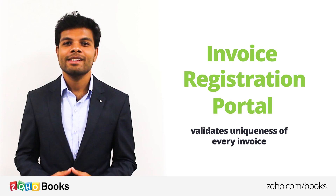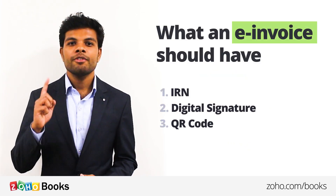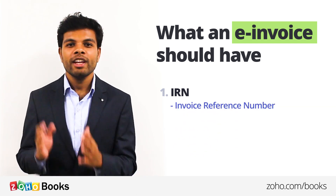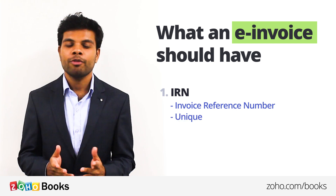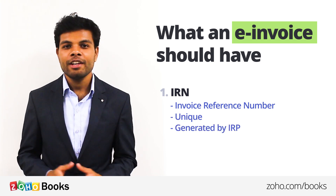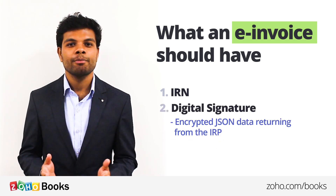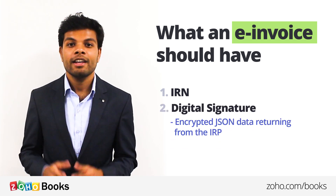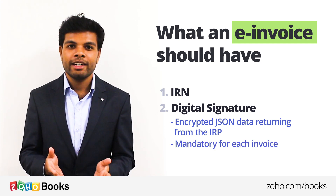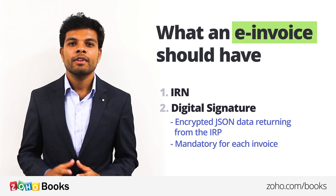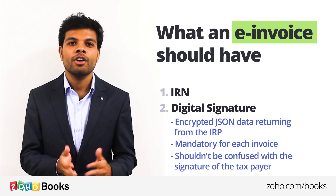According to the new e-invoice standards, these are what an e-invoice should have. First, the IRN, which stands for Invoice Reference Number. This number is unique for each invoice and can be generated by the IRP. Second, a digital signature, which is simply encrypted JSON data returning from the IRP. The digital signature is mandatory for each invoice to be valid, and should not be confused with the signature of the taxpayer.